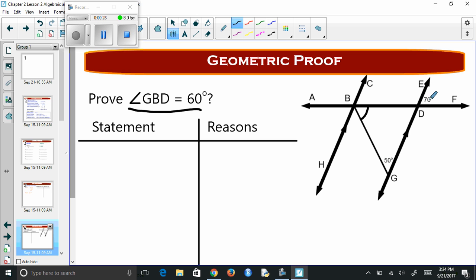We can use the 70 and the 50. So the first thing we have to do is measure of angle EDF equals 70 degrees. Measure of angle DGB equals 50 degrees. And the reason why we know that is it's given in the problem.